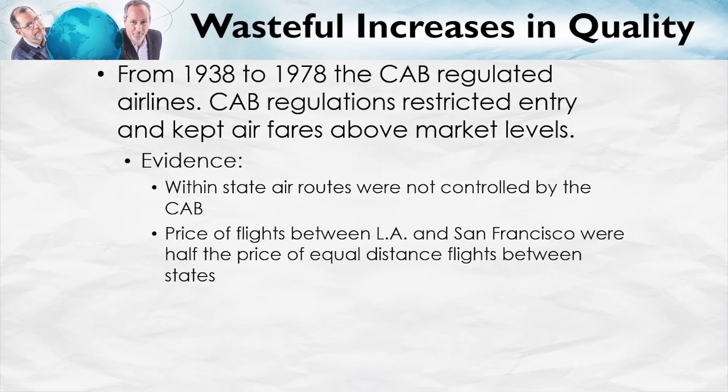Therefore, the price of flights between cities within a state, such as between LA and San Francisco, was not regulated by the CAB. And looking at the prices of these flights, economists found that they were half the price of equal-distance flights which were between two different states, and thus regulated by the CAB. So it looked like the CAB was keeping the prices of airline flights twice as high as market rates.